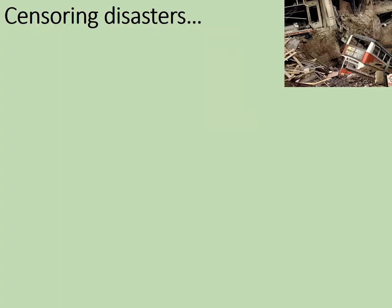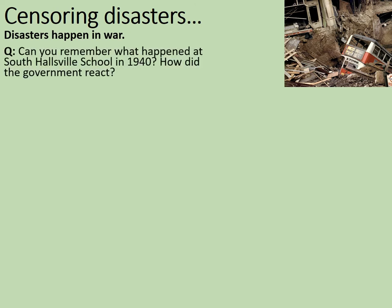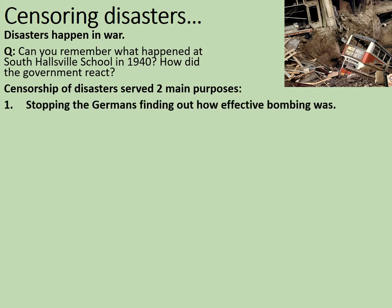We're now going to consider the censoring of disasters. In a previous lesson, we considered the censoring of the South Hallsville School Disaster, which killed 600 people. Disasters do happen in war — this is a sad fact of what they are. The government reacted by saying that 77 people had been killed; in reality, probably nearer 600 had been killed. Censorship of disasters served two main purposes: stopping the Germans finding out how effective their bombing was, and preserving civilian morale so that people wouldn't give up.